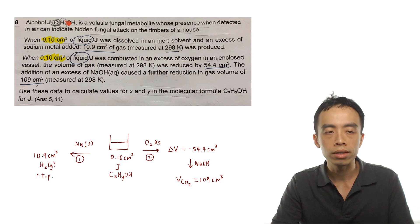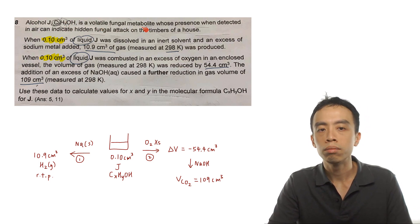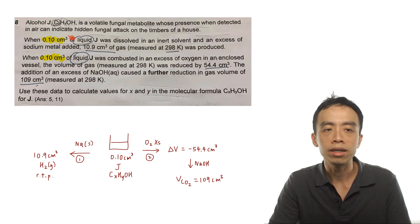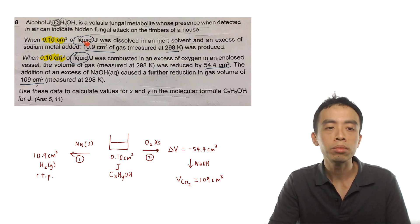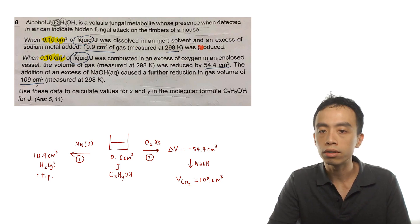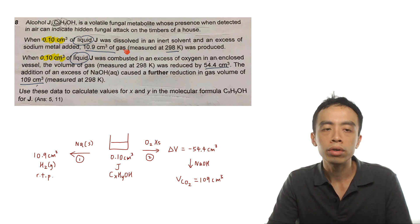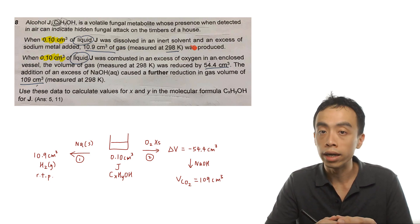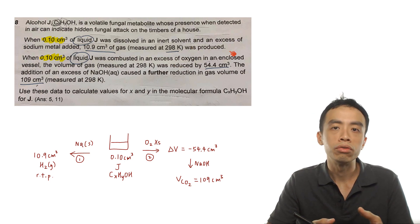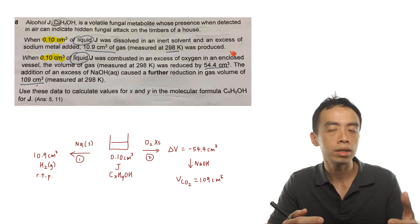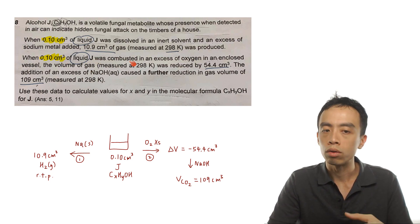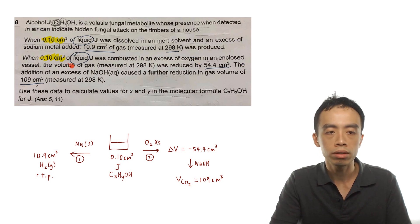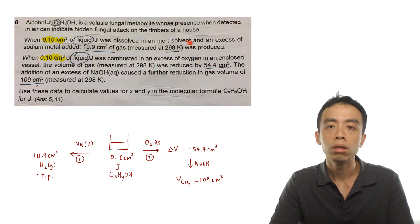Alcohol J, with molecular formula CxHyOH, is a volatile fungal metabolite whose presence when detected in air can indicate hidden fungal attack on the timbers of a house. When 0.10 cm³ of liquid J was dissolved in an inert solvent and an excess of sodium metal is added, 10.9 cm³ of gas measured at 298 Kelvin was produced. This is the reaction between alcohol and sodium metal to give hydrogen gas. Now I take the same volume of liquid J and combust it in an excess of oxygen in an enclosed vessel. The volume of gas measured at 298 K was reduced by 54.4 cm³.